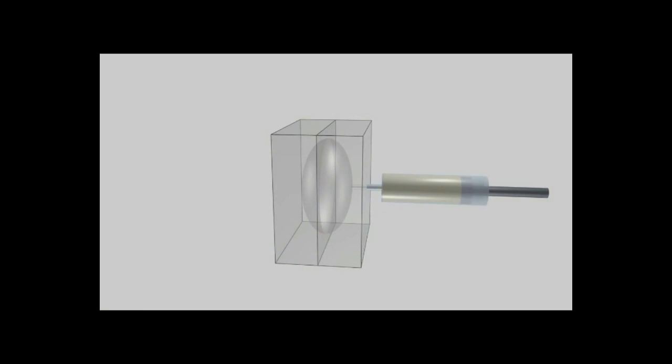In principle, injection molding is simple: melt plastic, inject it into a mold, let it cool, and then out pops the plastic product.